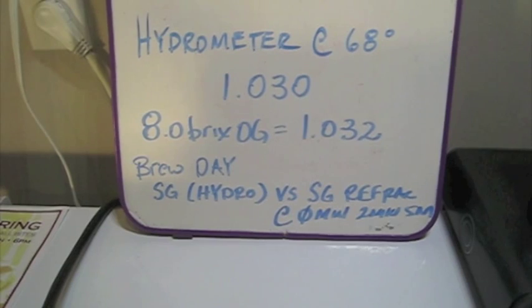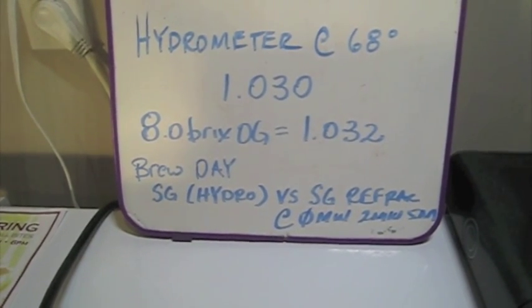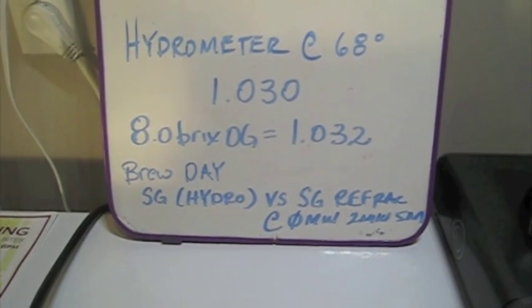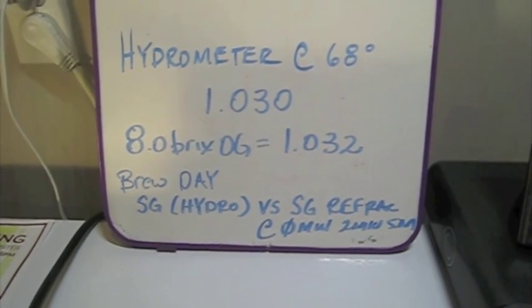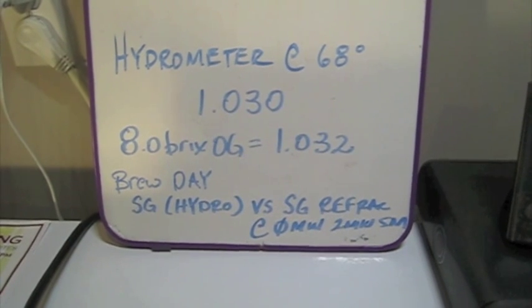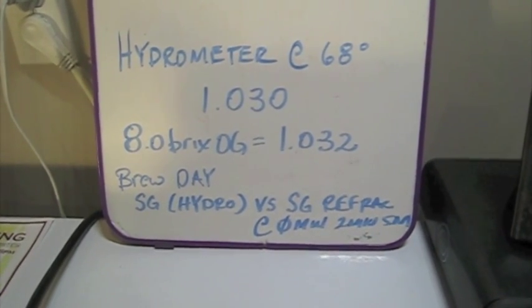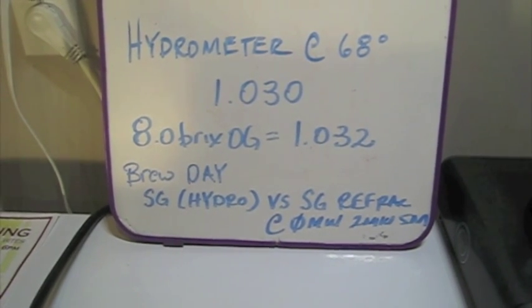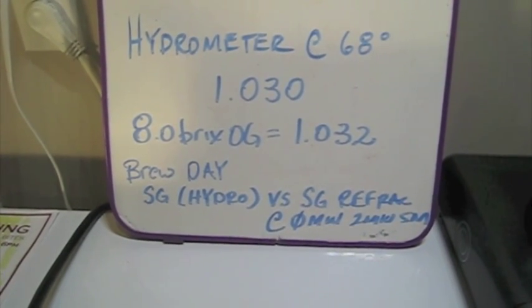And then I'll repeat the steps similar to what I did here. But I'll measure the gravity reading both immediately upon taking the sample at two minutes of cooling and five minutes of cooling. I'll probably do the same thing, actually, once the boil is done. And I can measure the actual starting gravity, the original gravity.